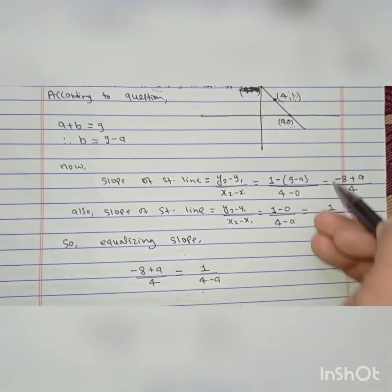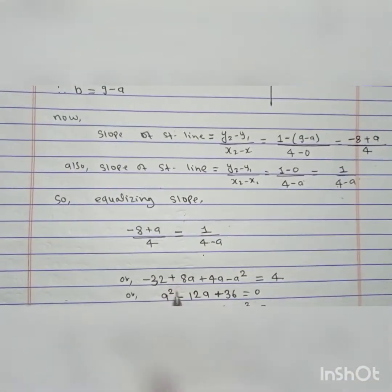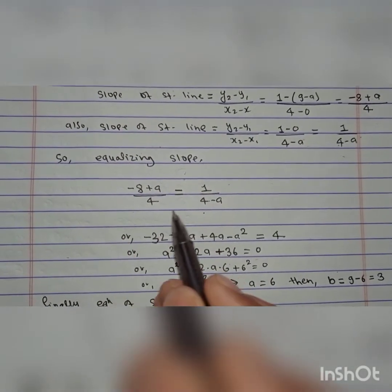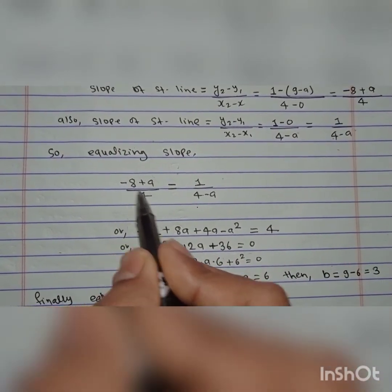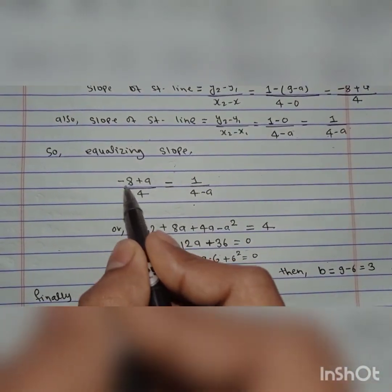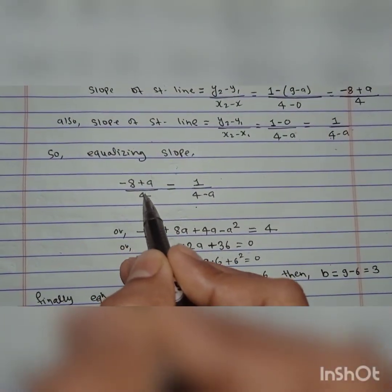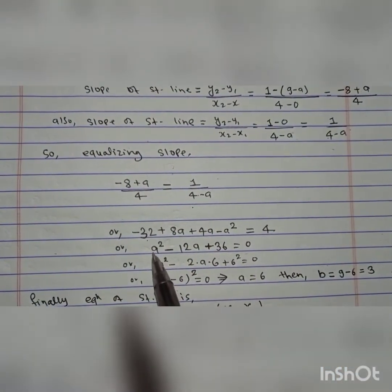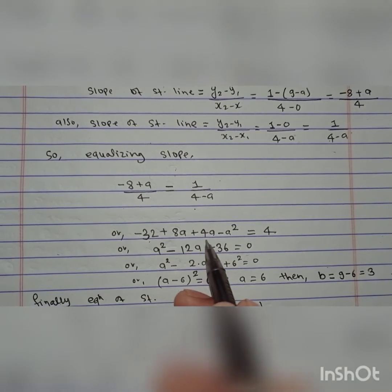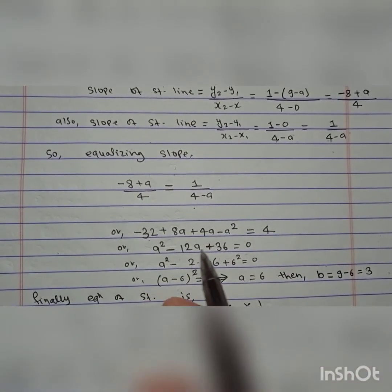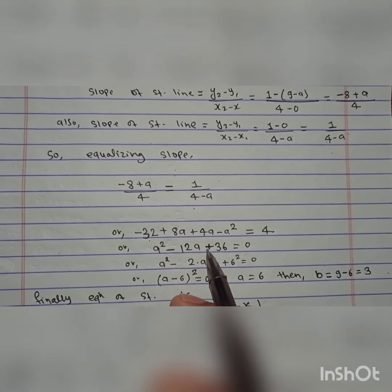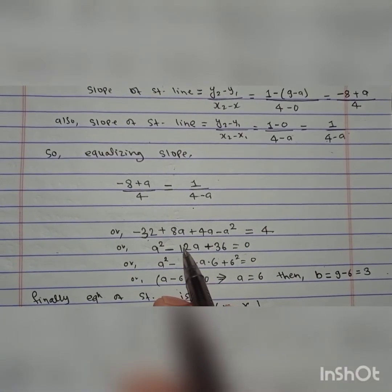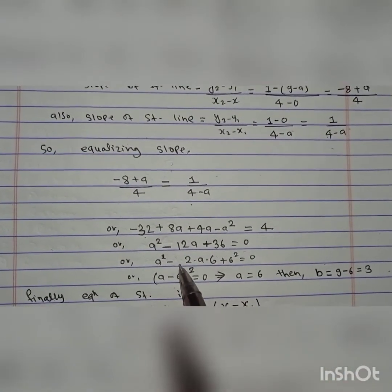Setting (a - 8) / 4 equal to 1 / (4 - a), we cross multiply: (a - 8)(4 - a) = 4 × 1, which gives -8 × 4 + 8a + 4a - a² = 4, that is -32 + 8a + 4a - a² = 4. Transposing all terms to one side, we get a² - 12a + 36 = 0.